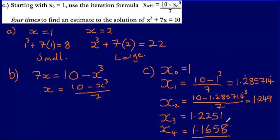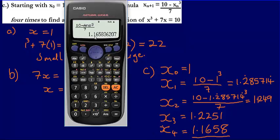That's to four decimal places. Usually the question will tell you how to round — perhaps to two decimal places or three significant figures. But if it doesn't specify anything, I'd recommend writing out the full answer shown in your calculator.